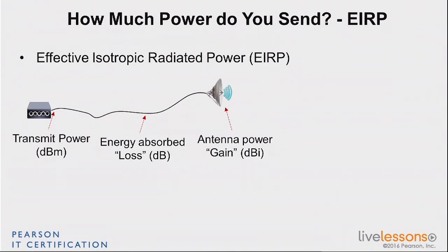All these together is the energy you are radiating out of your antenna, and each country regulates how much that has the right to be. The idea being that you can't send a signal that is too powerful — too powerful to injure people, damage equipment, or disrupt neighboring communications. So there is a certain maximum amount of energy you have the right to send out of your system, and that is the EIRP — Effective Isotropic Radiated Power.